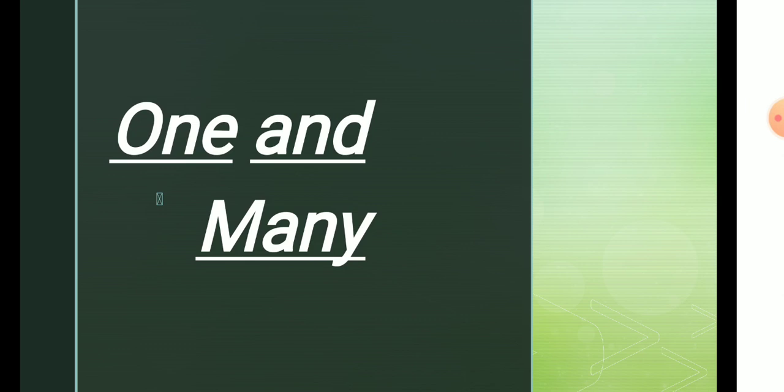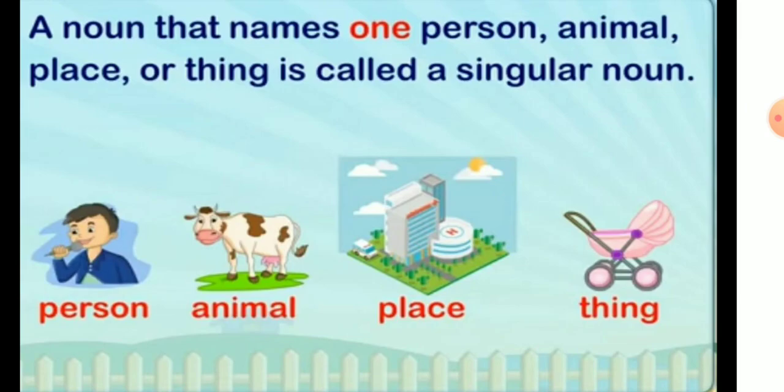Students, do you remember what is a noun? A noun is a name of a person, place, animal, or thing. A noun can be one or many in number. A noun that names one person, place, animal, or thing is called a singular noun.